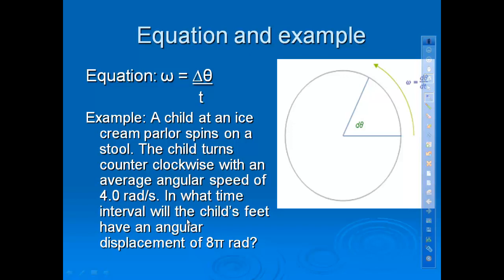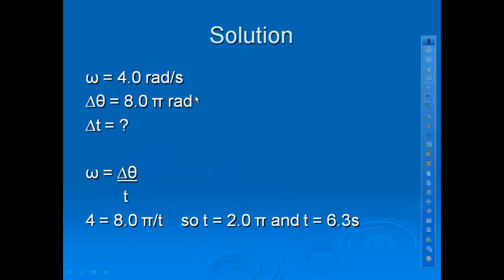So, let's look at our example. A child at an ice cream parlor spins on a stool. He spins counter-clockwise with an angular speed of 4 radians per second. In what time interval will the child's feet have an angular displacement of 8π radians? So, essentially they're telling you this is how fast the kid is going. How long is it going to take the kid to go 4 times around a circle? Because 8π radians would be 4 times around a circle. Alright, so here are our givens. We have angular speed of 4, angular displacement of 8π. And we want to know what our time is. So, just like before, 4 equals 8π divided by t. So, t is equal to 2π or 6.28 seconds.